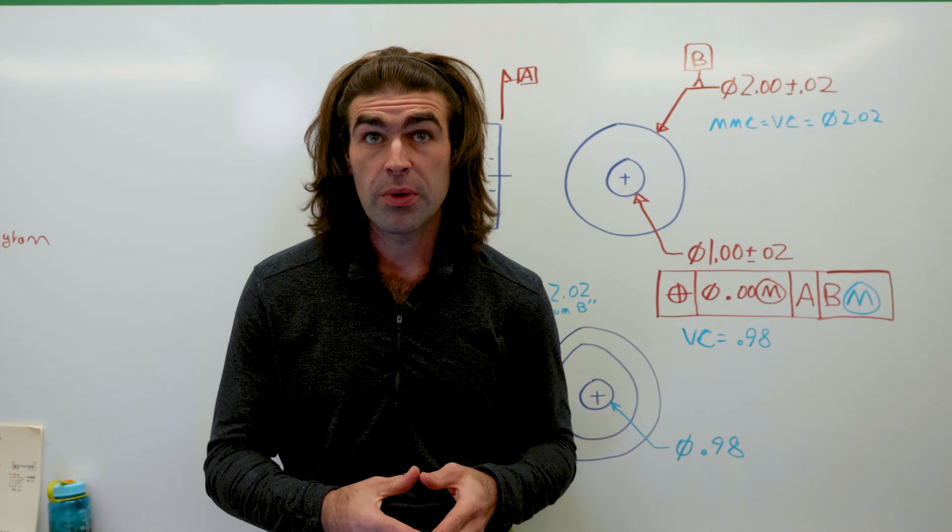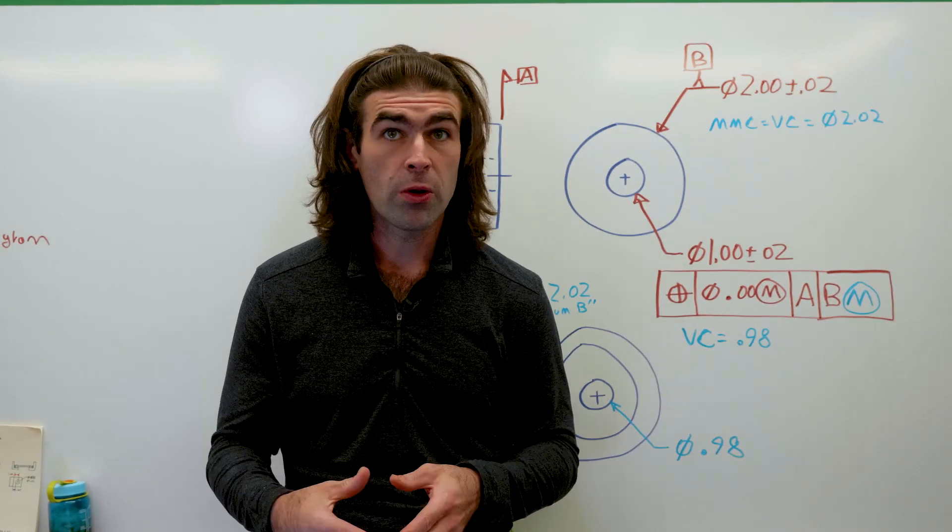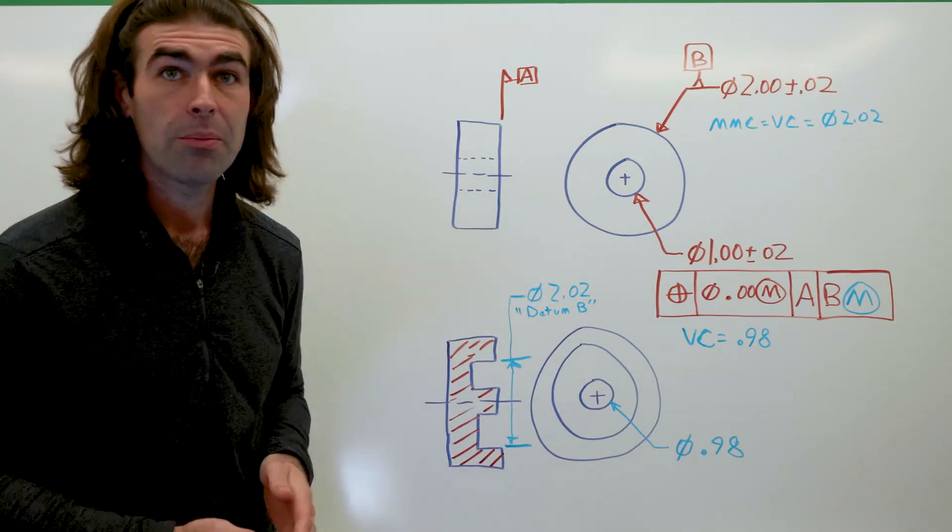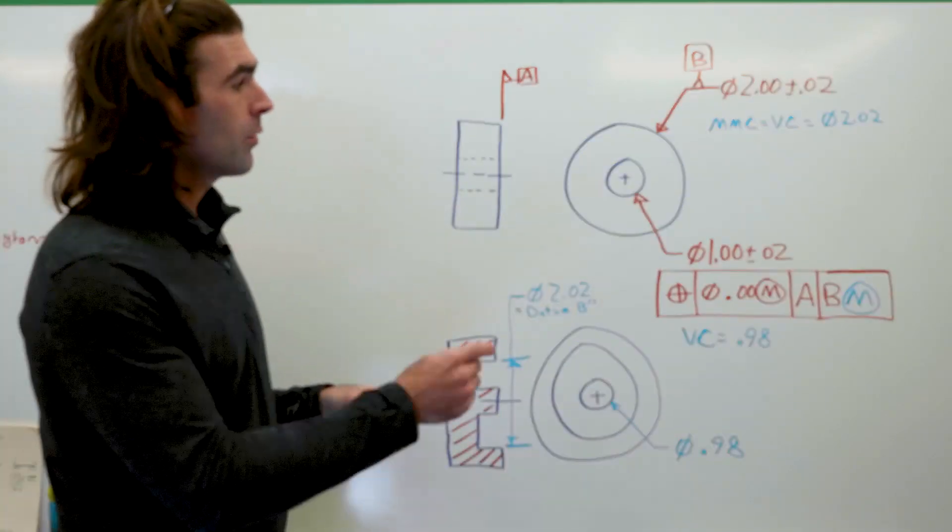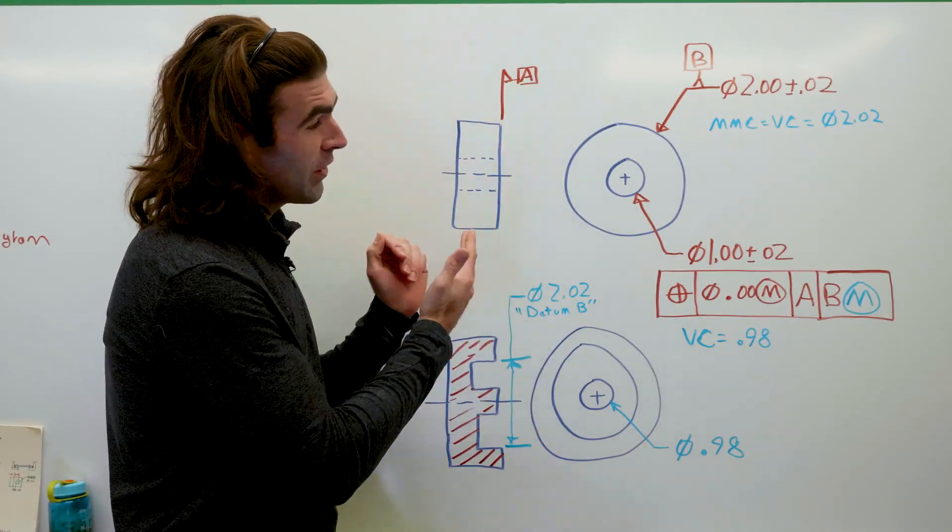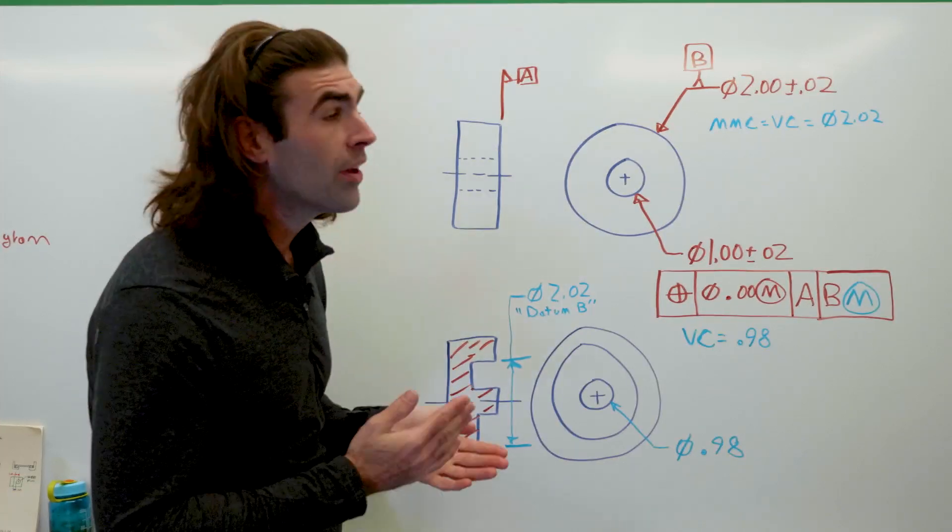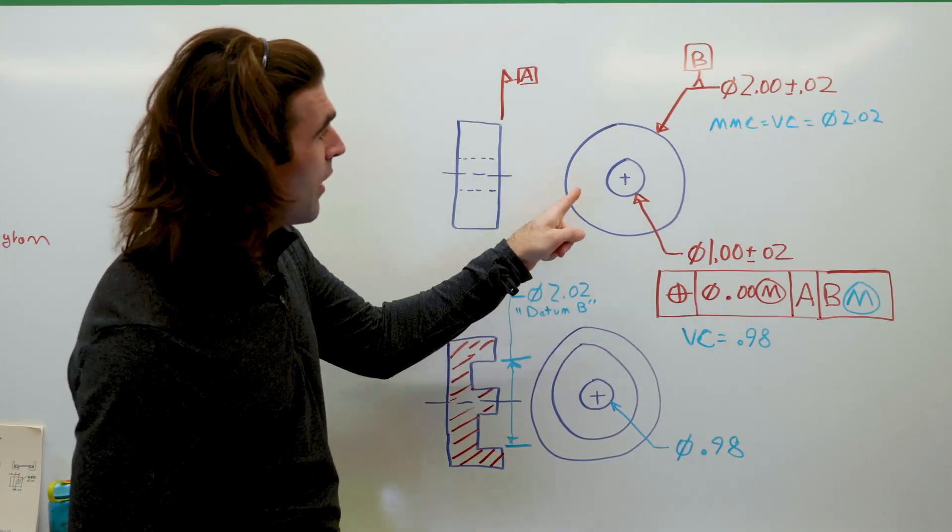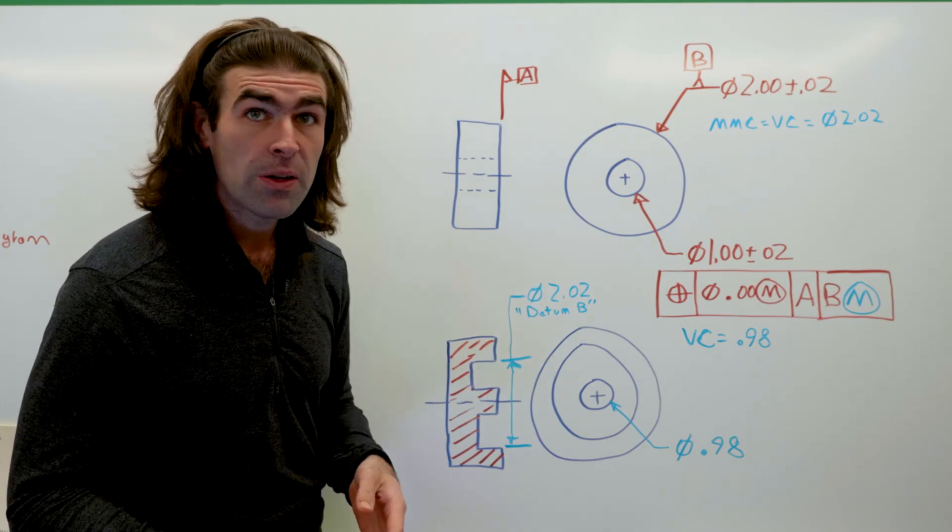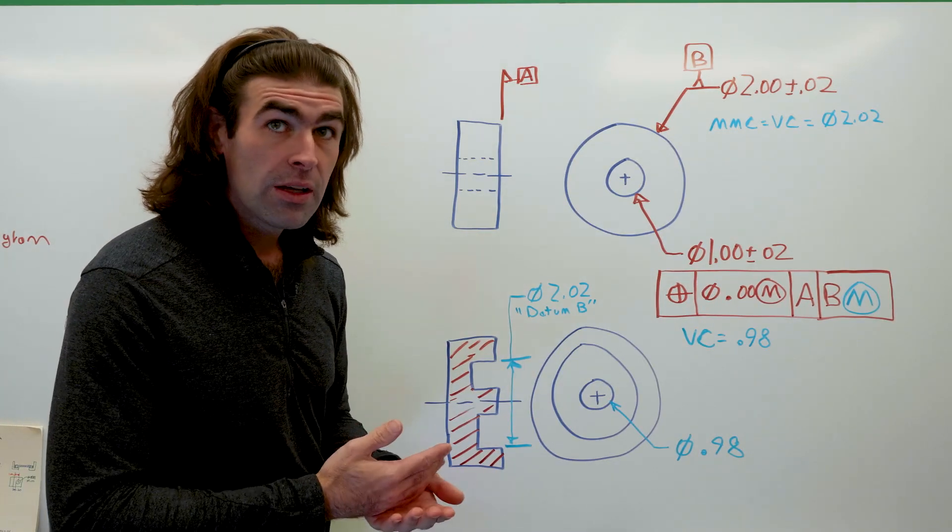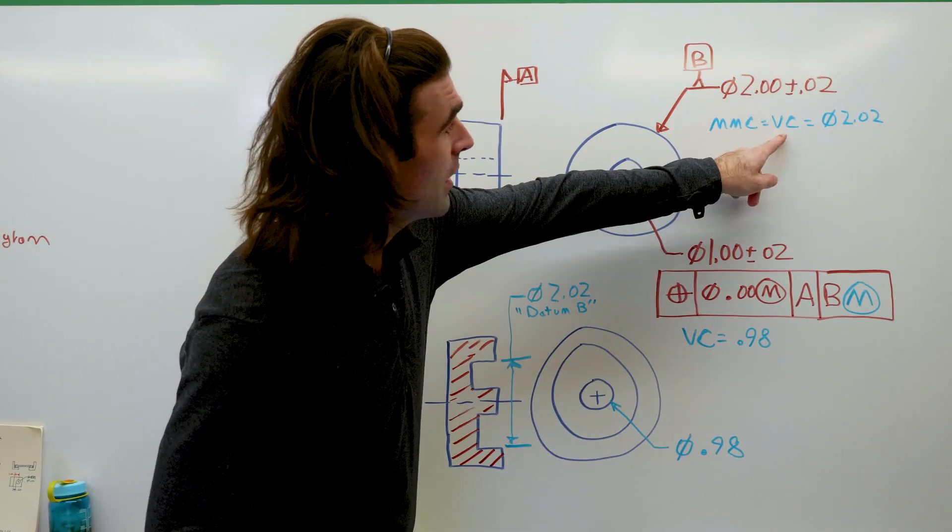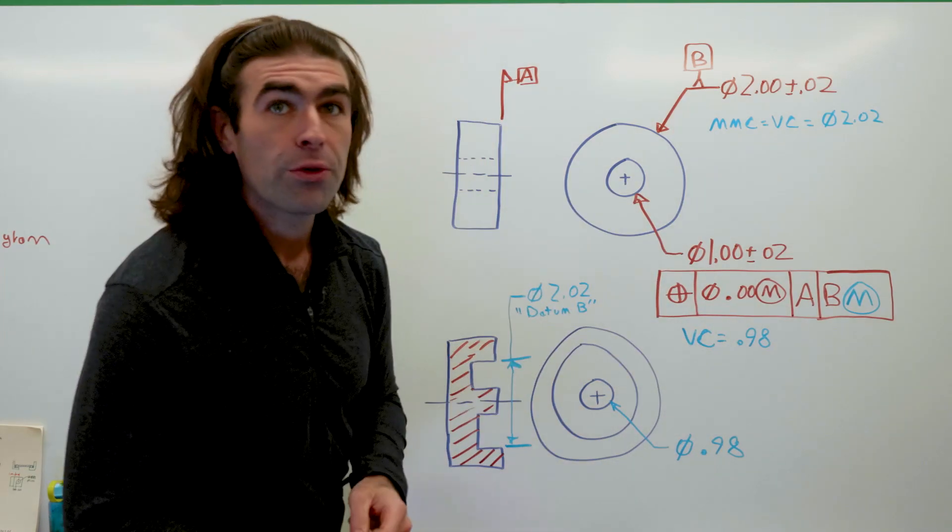So let's talk about the datum material boundary in a little more detail. I've got an example up here. So we've got a part up here on the top. It's basically a donut. We've got two diameters. We can see the profile view here. So we've identified datum A as that flat surface. Datum B is the outside diameter. Now, all it has is a size dimension. So the MMC is going to equal the virtual condition for this, right? So in this case, the MMC equals virtual equals 2.02. Why that matters